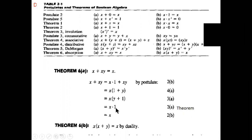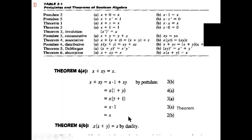x plus 1 equals 1. Instead of x, y is there so y plus 1 equal to 1. Then x dot 1 equal to x. So x plus xy equal to x. We have already proved this absorption theorem.